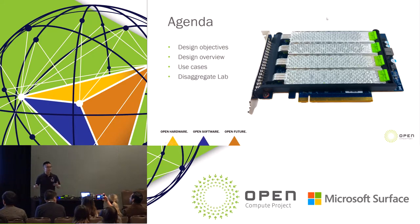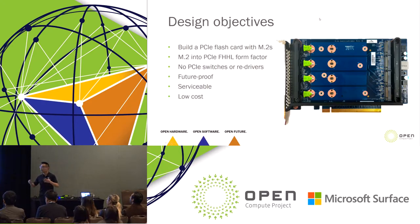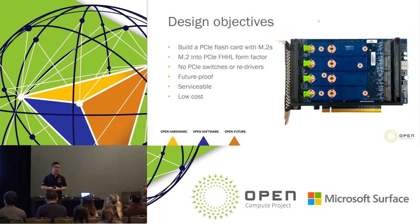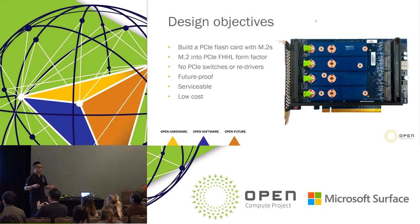Michael will present use cases and also his work at Disaggregate Labs. When we were envisioning Ava, to put it very simply, we wanted to build a PCIe Flash card with M.2s — specifically, putting M.2s into a PCIe CEM-compliant full-height-half-length form factor. One of the things we really wanted to stress was to keep it simple: from a high-speed perspective, no PCIe switches, no re-drivers. We also wanted it to be future-proof and, true to Facebook's design standards, serviceable and low cost.